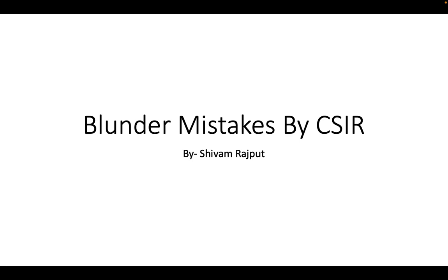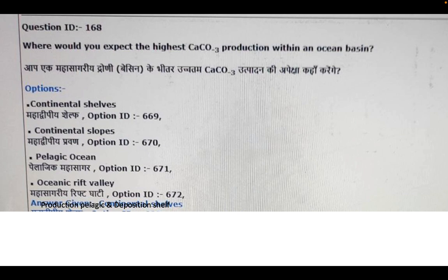So let's start. The very first question: where would you expect the highest calcium carbonate production within an ocean basin? Now according to this question, the right answer is pelagic ocean, it's the official answer. But some of the students think that the continental shelf is the correct answer. Let me tell you very correctly, they are talking about calcium carbonate production, not deposition. When we talk about deposition it's continental shelf.